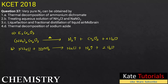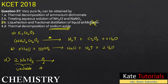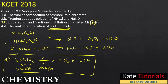Option C is liquefaction and fractional distillation of liquid air — nothing special, not going to give pure nitrogen. Option D is thermal decomposition of sodium azide (NaN₃). Sodium azide is so unstable that even at room temperature it will decompose. Taking two molecules of sodium azide, it decomposes to give three molecules of nitrogen gas and two molecules of sodium metal. So very pure nitrogen can be obtained from option D. The answer for question 37 is D.